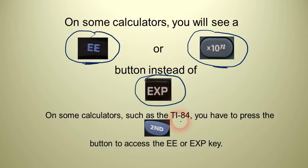Now, if you're looking for the button and you still can't find it, it's possible that you may have one of the fancier calculators, like a TI-84, in which you have to hit the second button and then access EE or EXP, which is sometimes on top of the comma. So let's look at an example.